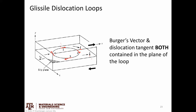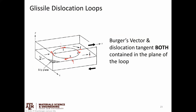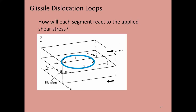On one side, the direction vector is parallel to the Burgers vector. On the other side, the tangent vector points in the opposite direction — anti-parallel. Consequently, they're going to move in different directions in response to a shear stress. This is a good time to test your knowledge.